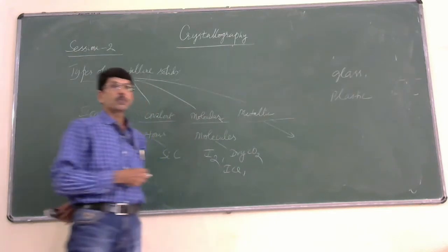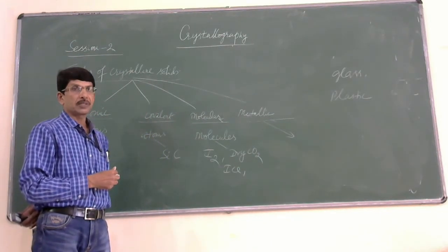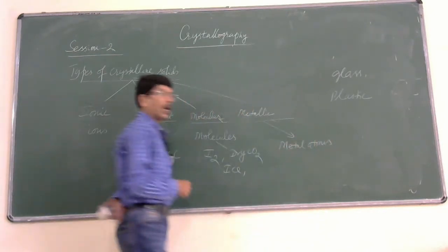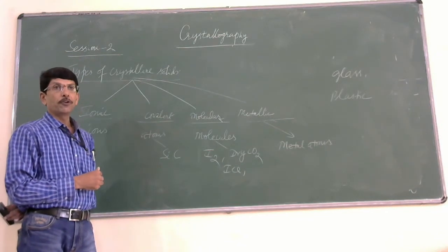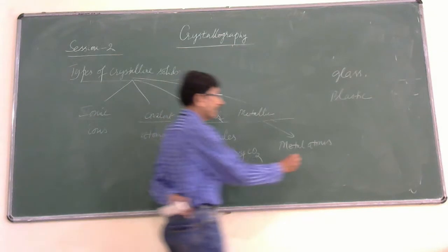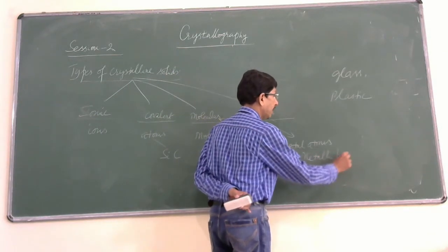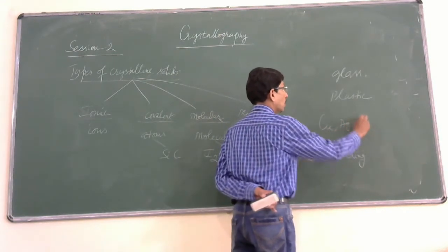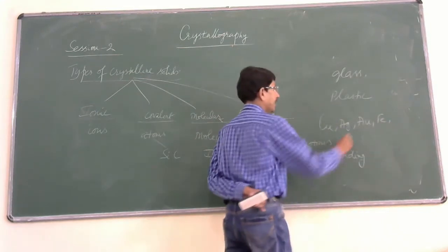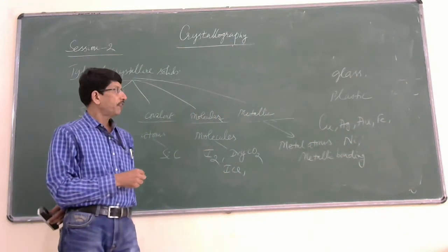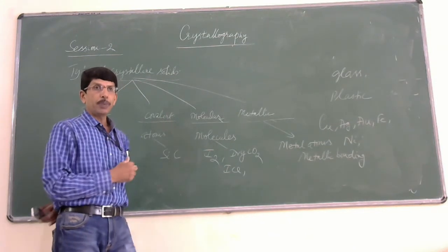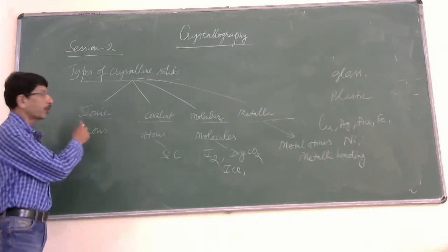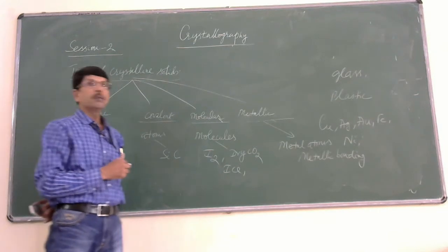The last category of crystalline solids are metallic crystals. As the name itself indicates, the constituent particles of metallic crystals are metal atoms. The forces of attraction between the metal atoms in a metallic crystal are metallic bonds. You name any metal — it is an example of a metallic solid. For example: copper, silver, gold, iron. So depending upon the type of particles that constitute the crystalline solid, we classify crystalline solids into four categories: ionic, covalent, molecular, and metallic solids.